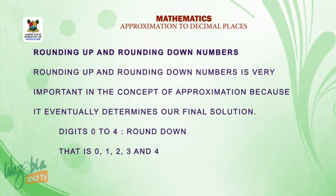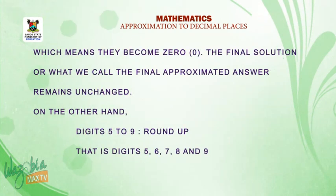Next, we have rounding up and rounding down numbers. Rounding up and rounding down numbers is very important in the concept of approximation because it eventually determines our final solution. Digits 0 to 4 are rounded down: 0, 1, 2, 3 and 4, which means they become 0. The final solution remains unchanged.